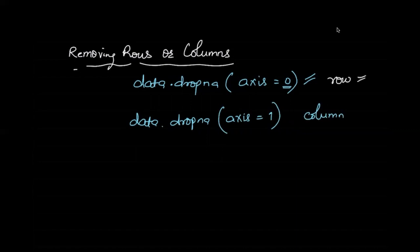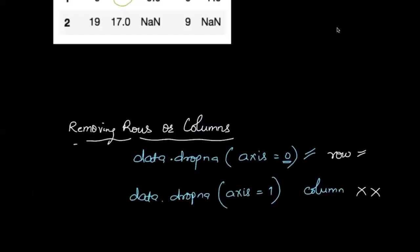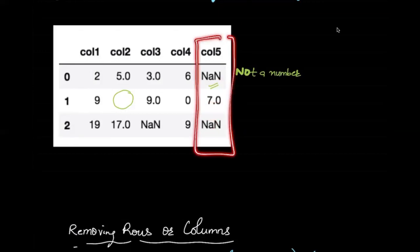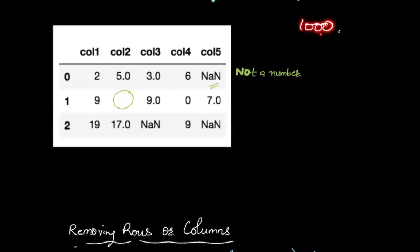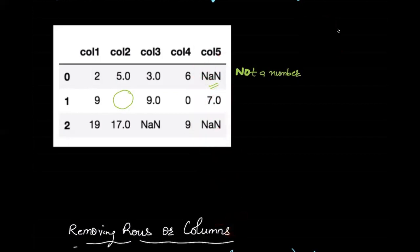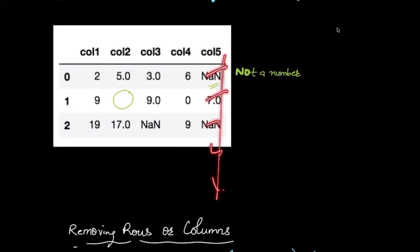There is also data.dropna(axis=1), which is for dropping a column. Dropping a row is still fine, but dropping a column is a big loss. For example, if you have 1000 rows and in 900 of them column 5 has NaN, then removing that column makes sense. But if you only have 10 missing values in those thousand rows and you remove the entire column, you will lose a majority of information.